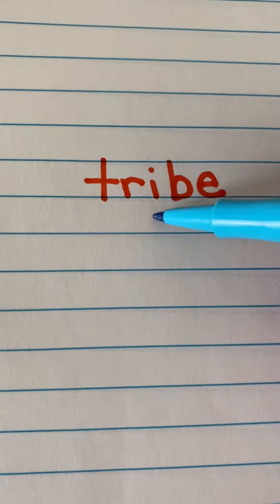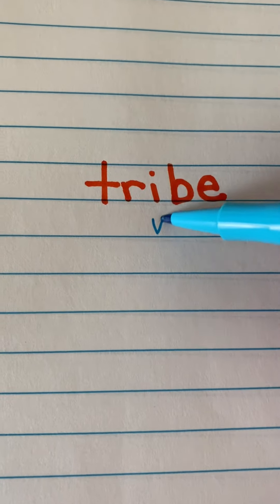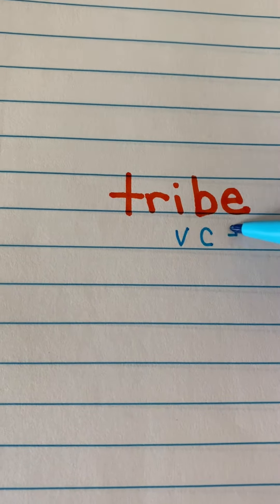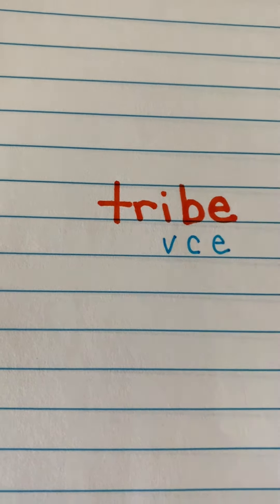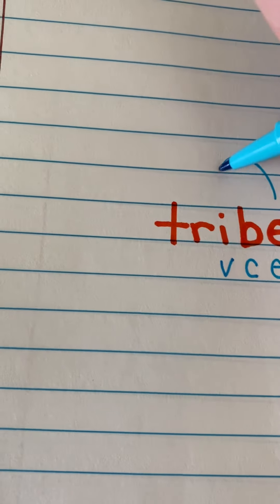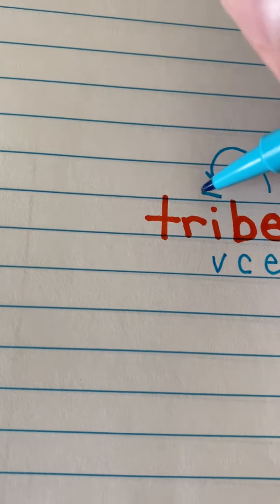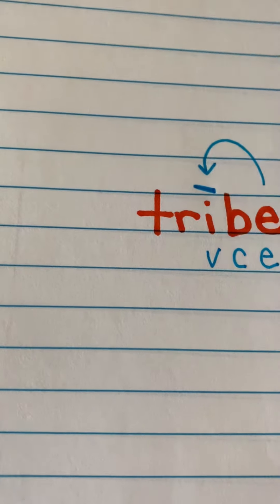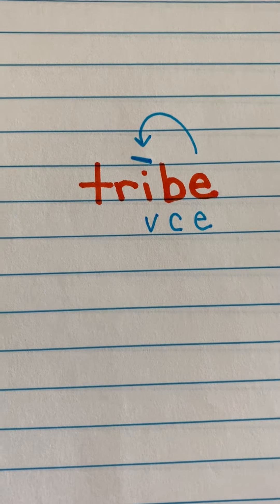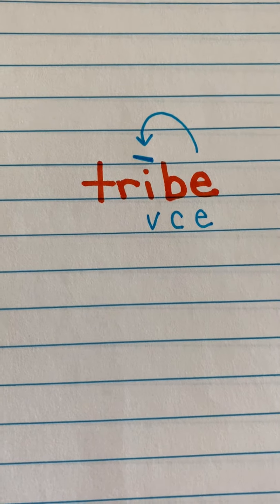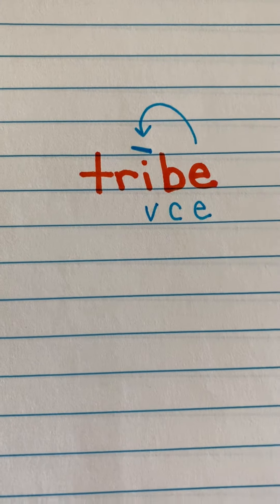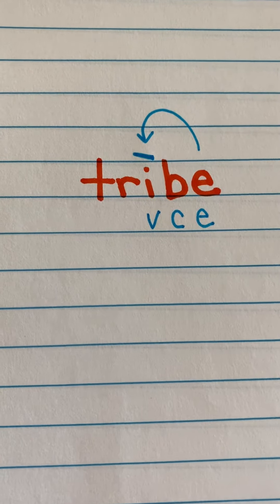This word is tribe. We have our vowel, which is I, our consonant is B, and then we have our silent E at the end. We know that this E is going to hop over and make the I say its name, and we're going to mark that I with a macron to indicate that it's making the long vowel sound — it's saying its name.